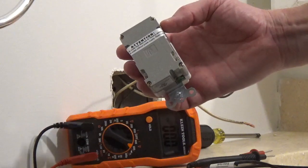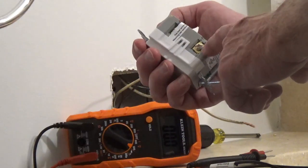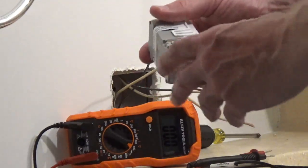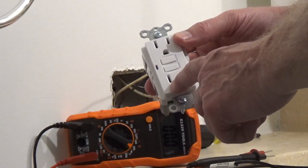Generally, the load side will have a piece of tape over the screws. On the line side, you're going to have a brass colored screw and a silver colored screw. And if you can't tell the colors, one side has a narrow slot, one side has a longer slot.